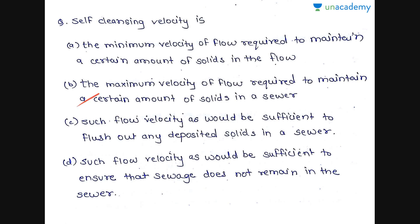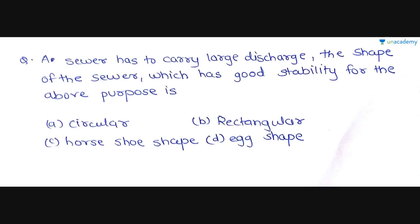Self-cleansing velocity is the minimum flow velocity at which no silting or settling of particles occurs in a sewer. As compared to other options, option C is the correct answer: self-cleansing velocity is such flow velocity as would be sufficient to flush out any deposited solids in a sewer.